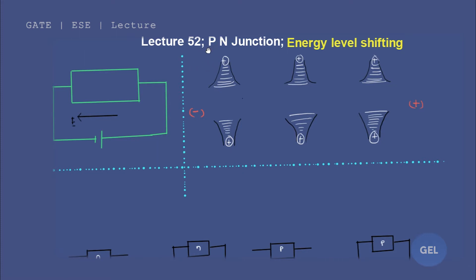We are in lecture number 52. This is chapter: Energy Level Shifting. This chapter is extremely important for every kind of analysis — not only from an exam point of view, but it is important for the GATE exam. Most importantly, it is important for the analysis of Fermi energy level shifting.